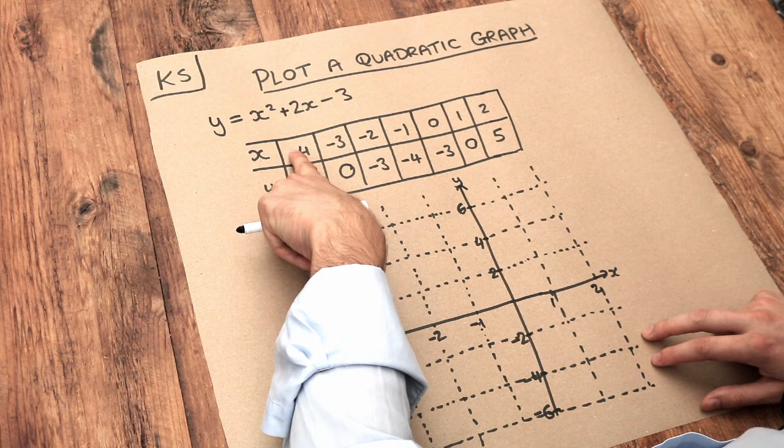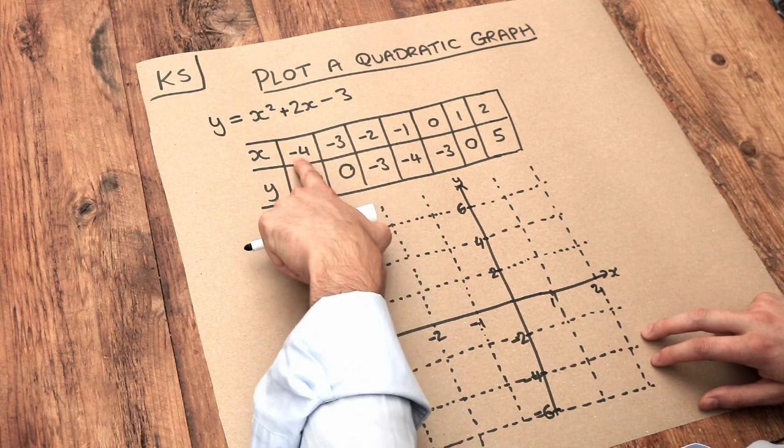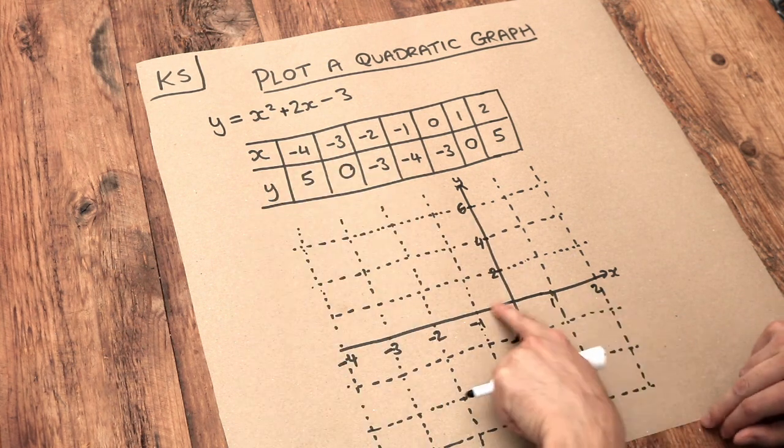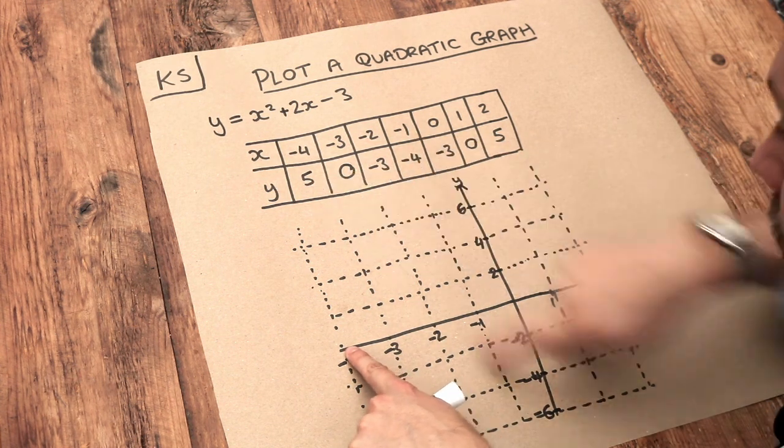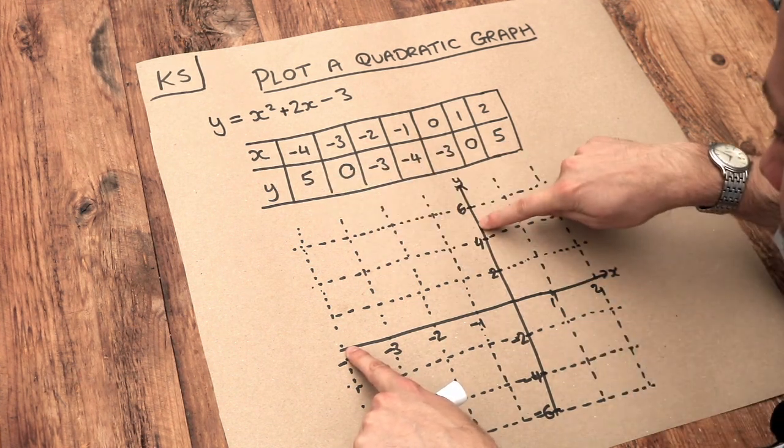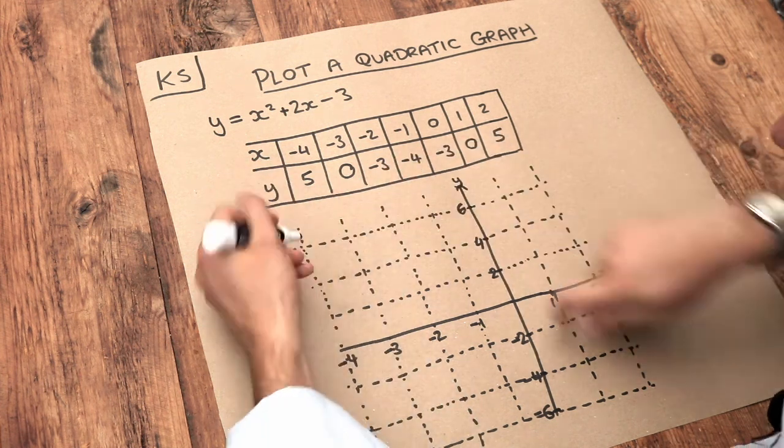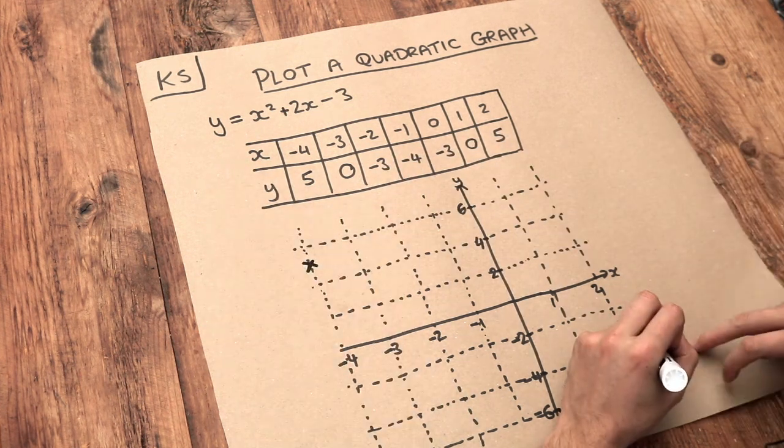Our first point is minus 4, 5. So the x value is minus 4. So if we go along the x axis here, minus 4. The y value is 5. So 5 on the y axis is going to be here. We get this point here. So let's plot that with a cross or a dot.